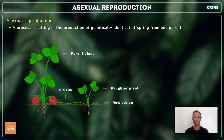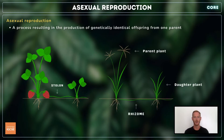Some plants, like the strawberry plant, produce long shoots called stolons, which grow horizontally over the ground. New plants grow from buds on the stolons, which eventually wither and die, leaving an independent plant genetically identical to the parent.